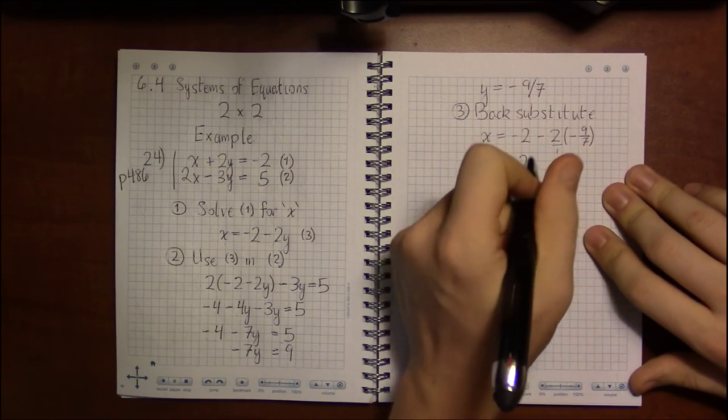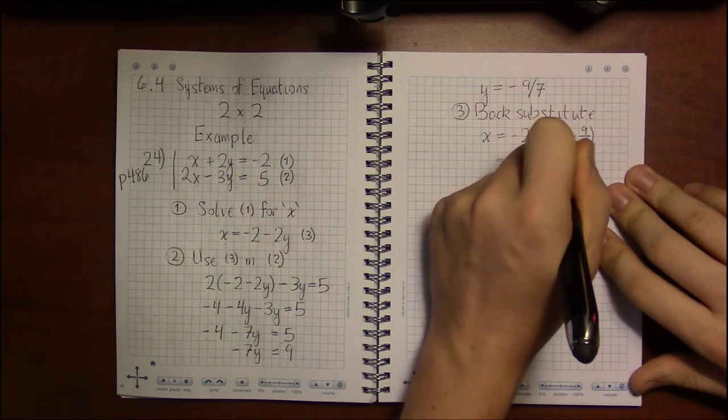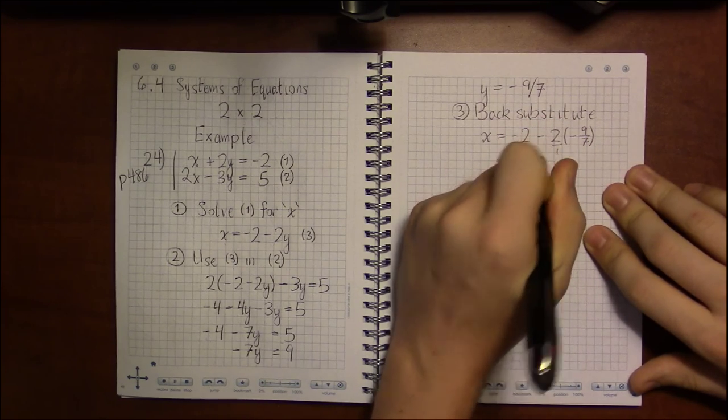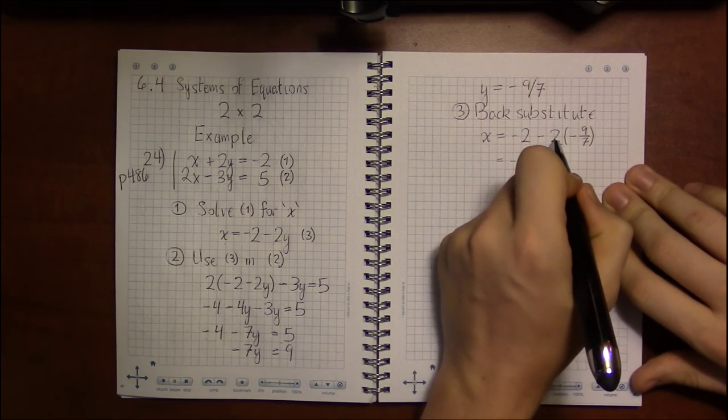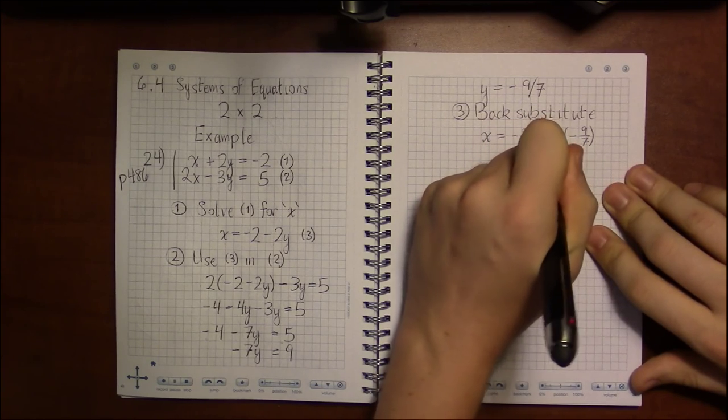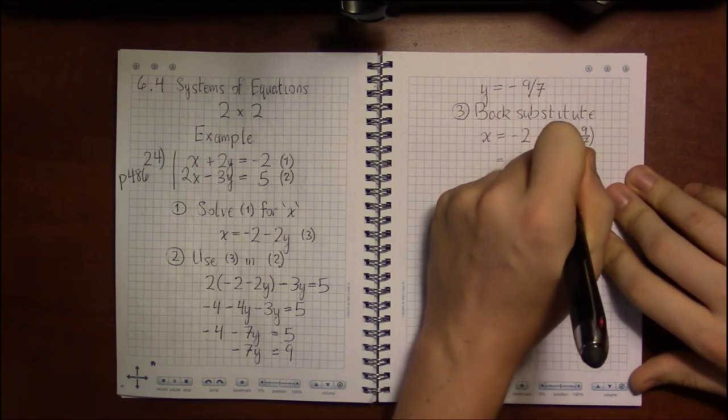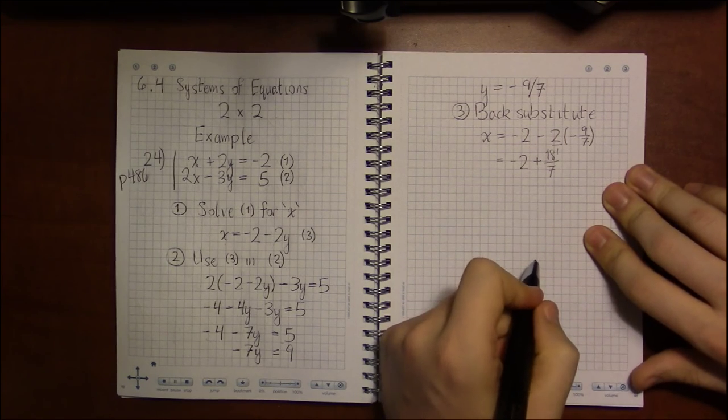2 we can write as 2 over 1. So a minus times a minus is a positive. 2 times 9 is 18, and 1 times 7 is 7.